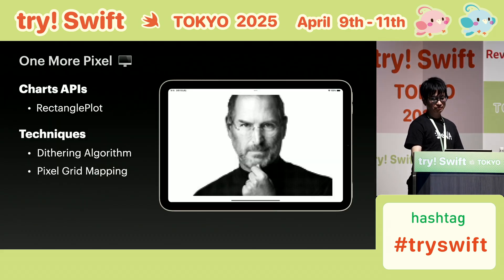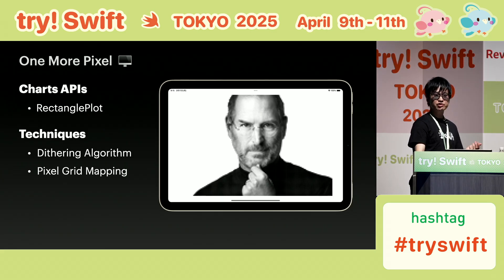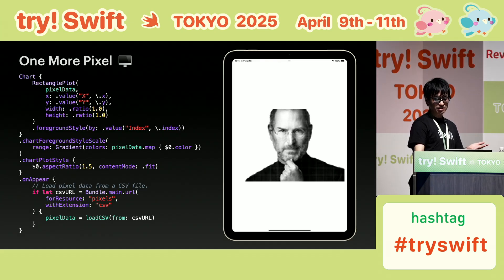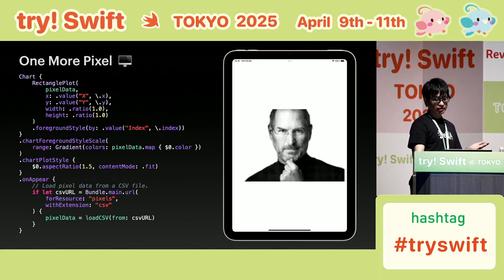Lastly, one more piece: pixel art built with rectangle plots. Each point is drawn as a tiny square. You might recognize who it is. Here's the code — each rectangle represents a single pixel. The x and y coordinates along with color data are used to plot everything all at once. It's just a lot of data points, but together they create something recognizable.